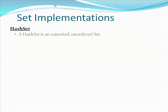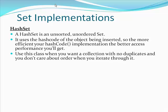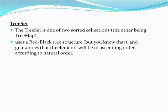The Set implementations. The first one is HashSet — an unsorted, unordered set. It uses the hash code of the object being inserted, so the more efficient your hash code implementation, the better access performance you will get. Use this class when you want a collection with no duplicates and you don't care about order when iterating. The second one is LinkedHashSet — an ordered version of HashSet that maintains a double linked list across all elements. Use this instead of HashSet when you care about iteration order; elements are in the order in which they were inserted. The last one is TreeSet, one of two sorted collections, which uses a red-black tree structure and guarantees elements will be in ascending order according to natural order.